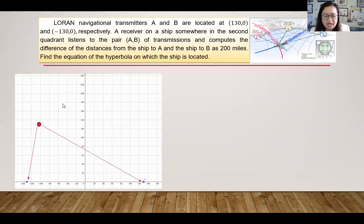Then we are given that the differences of the distances is 200. So let's say we have the distance of the ship from point A is d sub 1 while the distance of the ship from point B is d sub 2.